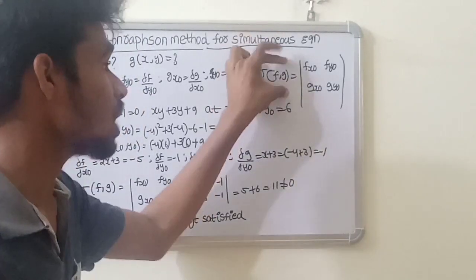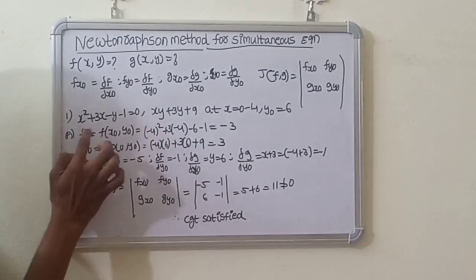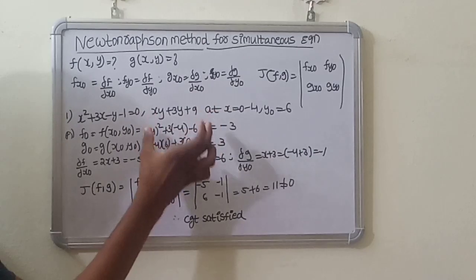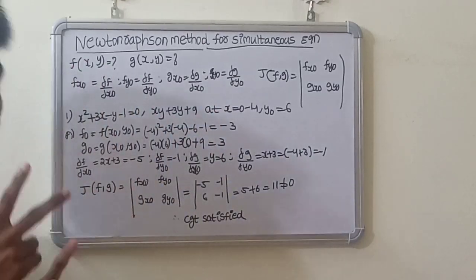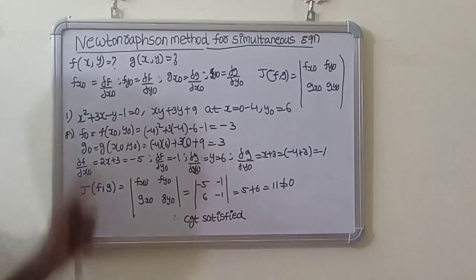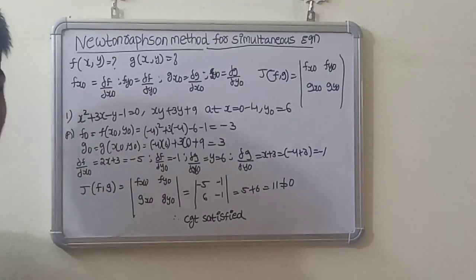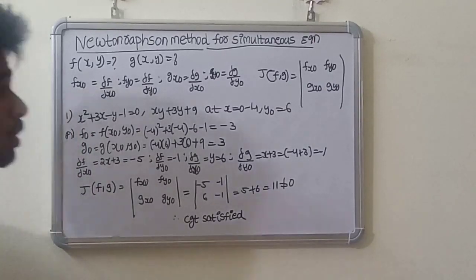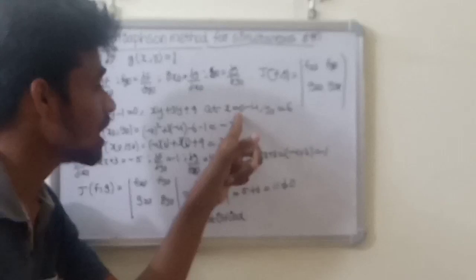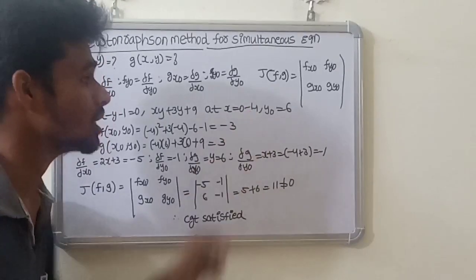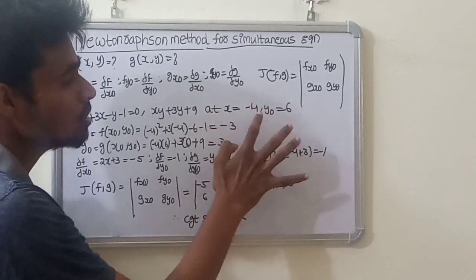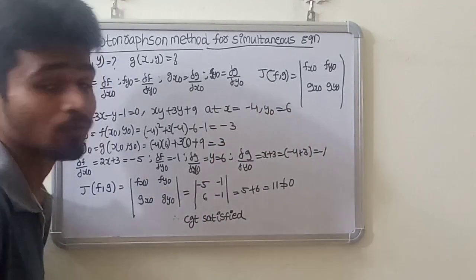First, we prove the Jacobian. We prove the convergence property. For this, take equation 1 and equation 2. f0 and g0 refer to f of x0, y0. The estimate starts at x0, with x0 and y0 as the initial values.